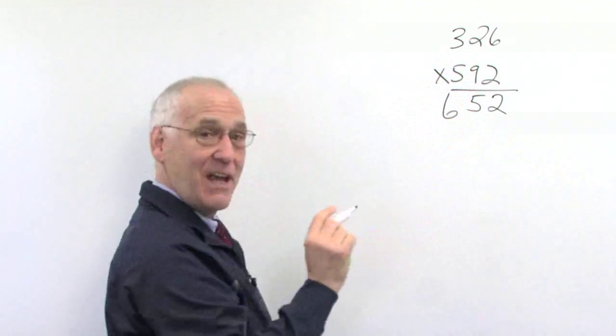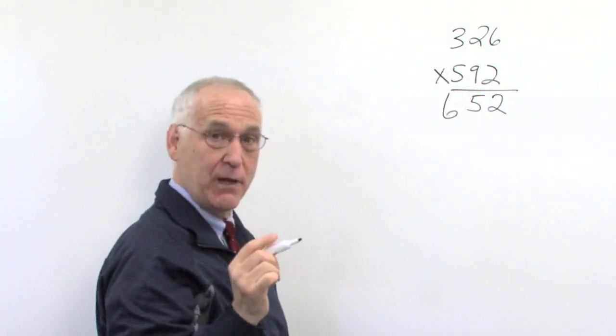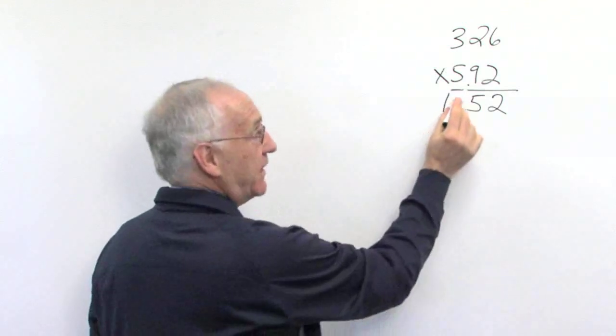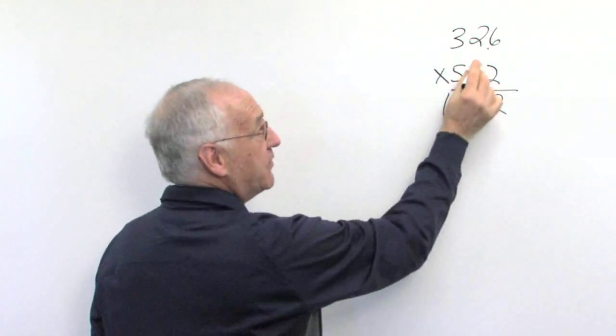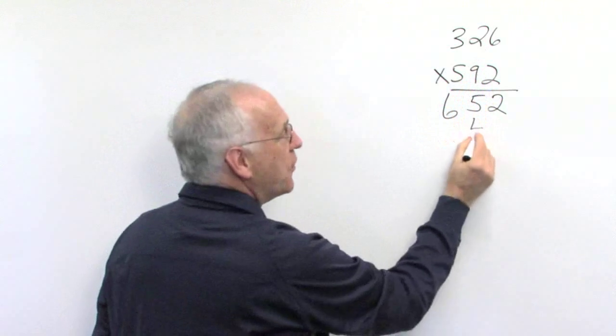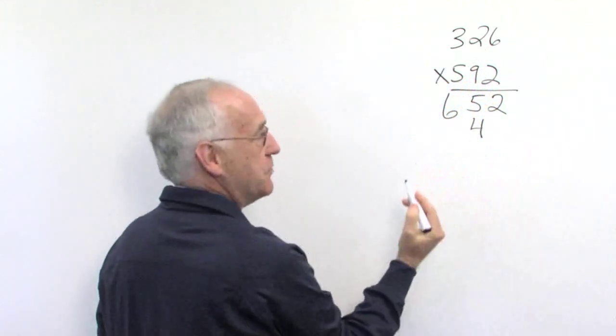Now remember alignment is very important when we're multiplying with many digits. Now we go to the next number. 9 times 6 is 54. Notice the 4 is aligned indented one position.